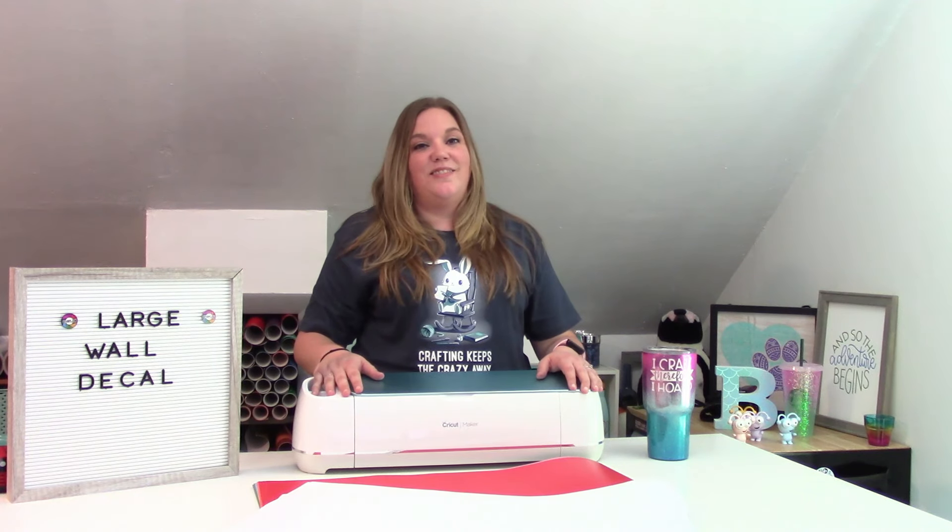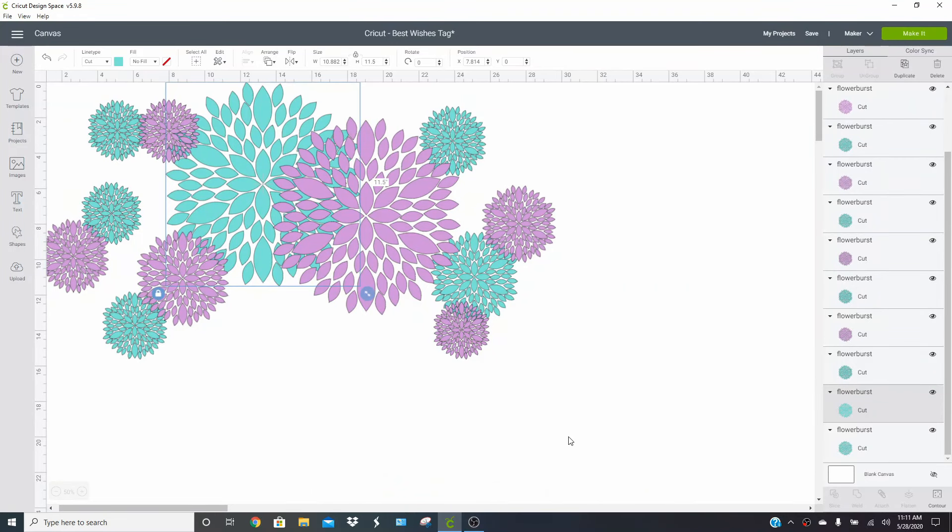So I'm going to show you guys how to do that over in design space. All I did was just upload a flower burst SVG and I made it a bunch of different sizes and a couple different colors and then just sort of laid it out to get an idea of how I want to lay it out on my wall.